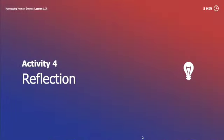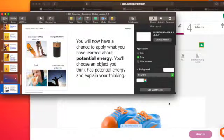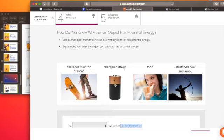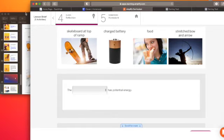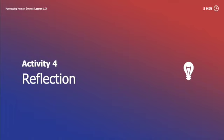Welcome back from that demonstration with the wind-up toy. We're going to spend the last few minutes reflecting on some of these concepts. In Activity 4 on Amplify, you're going to write about one of these four objects and whether or not it has potential energy. You only have to write for one of them. Now that we saw the wind-up toy: when I didn't do anything to it, it had no energy. When I wound up the toy, it had potential energy. And when I released the toy, it had kinetic energy.